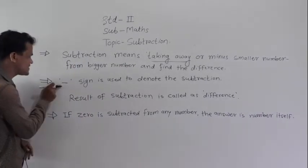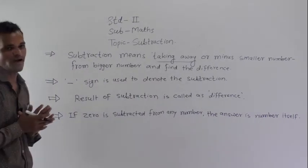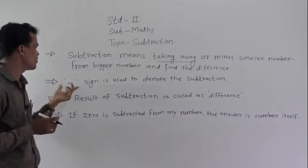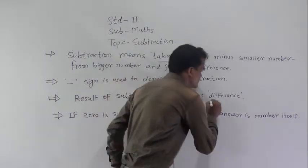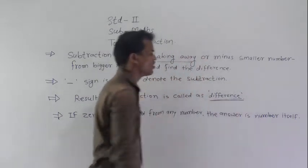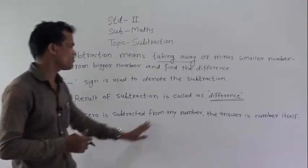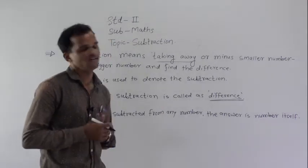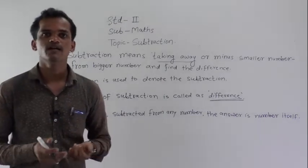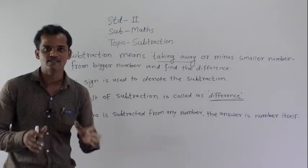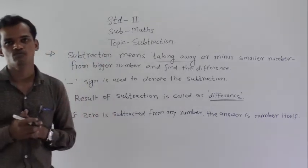This sign indicates subtraction — this sign is called as minus. The result of subtraction is called as difference. If 0 is subtracted from any number, the answer is the number itself. If we subtract 0 from any number, that same number will come as the difference. All these things we have learned in our first standard.